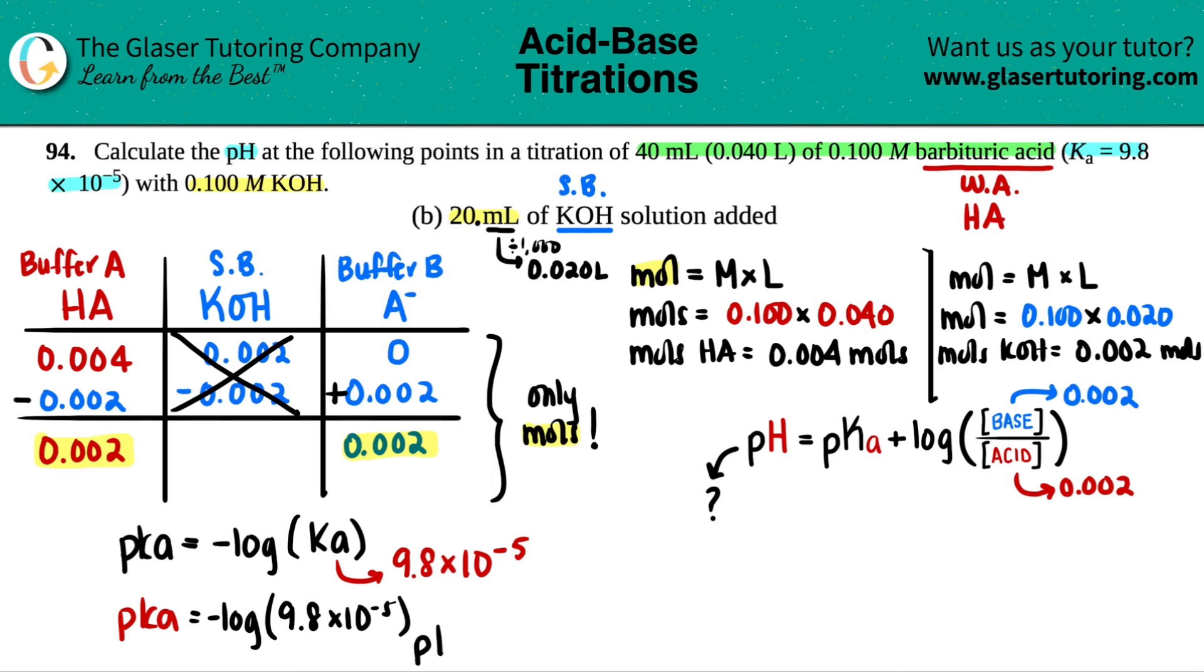pKa equals, let's see, negative log of 9.8 times 10 to the negative fifth. And I get 4.009. And that's the number that goes here.